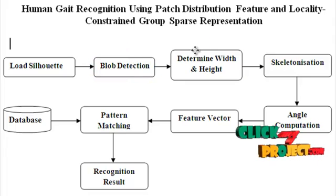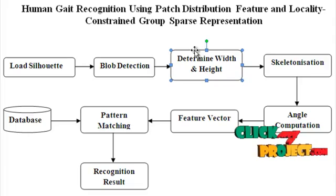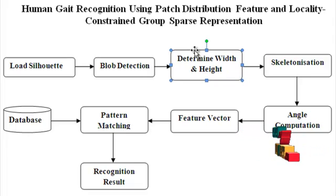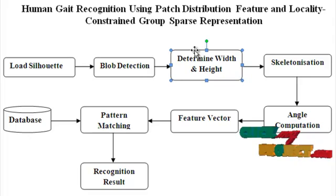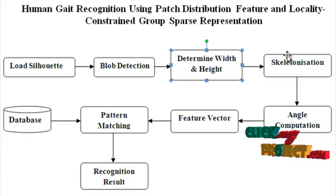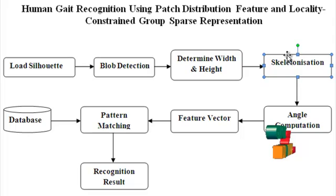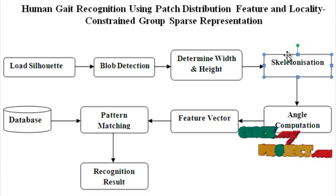The third block is determination of width and height. After enclosing the silhouette in a bounding box, we can easily estimate the width and height of the corresponding bounding box — that is, the width and height of the given test silhouette image. Following this, we have to proceed with skeletonization. Skeletonization is done via a morphological-based skeletonization method.